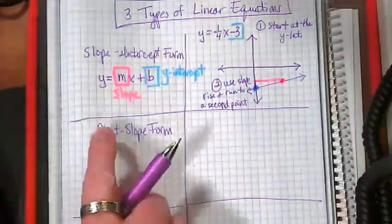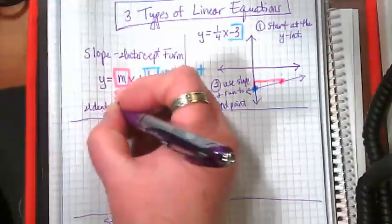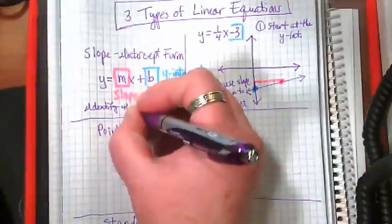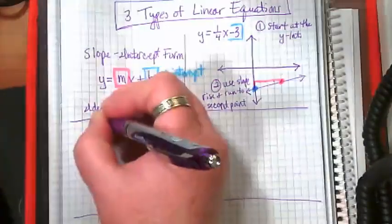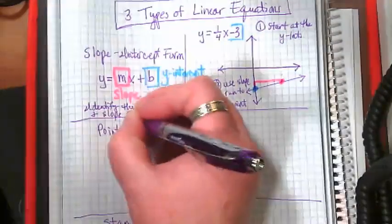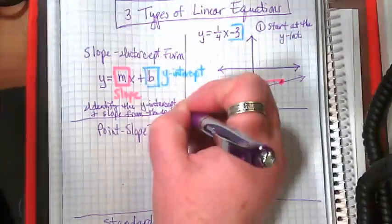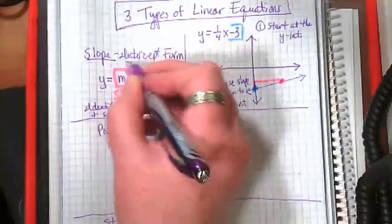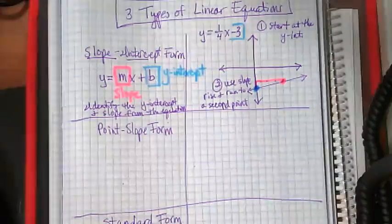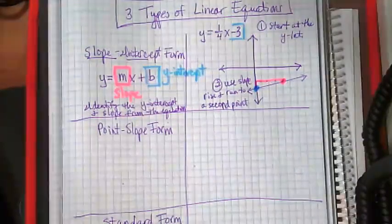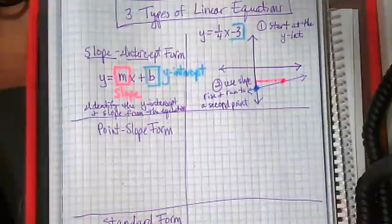So again, with slope intercept form, we identify y-intercept and the slope from the equation. And it says it right there in the name, slope intercept.